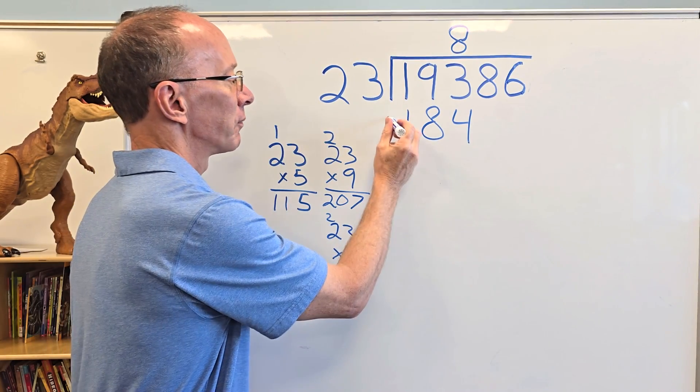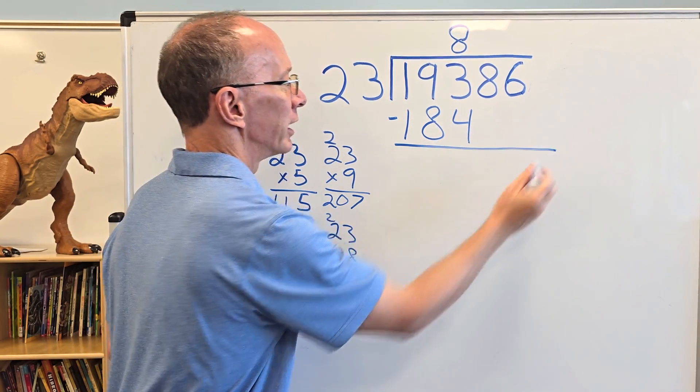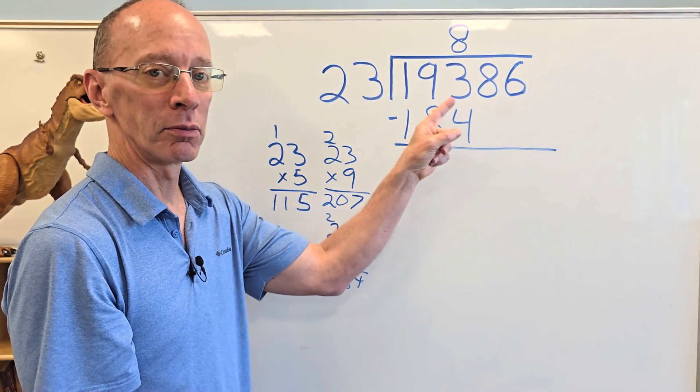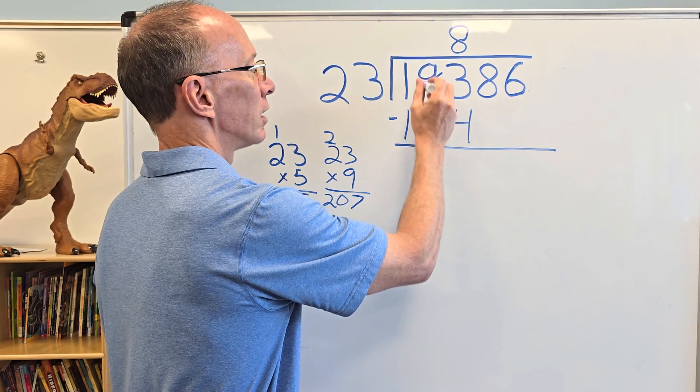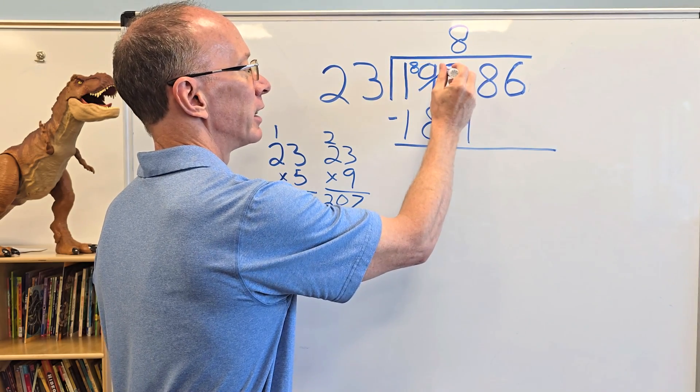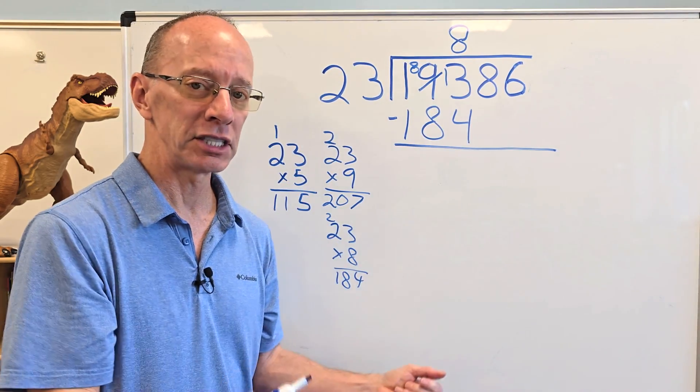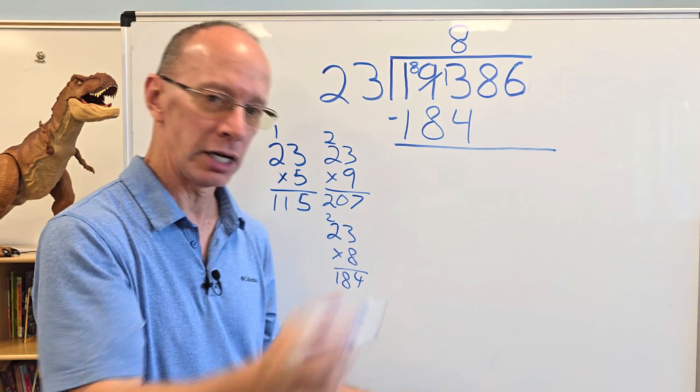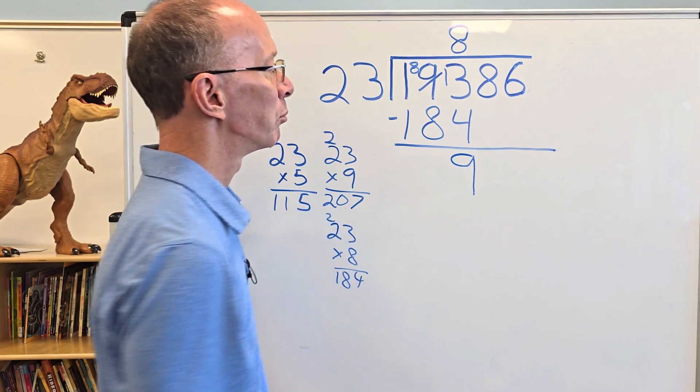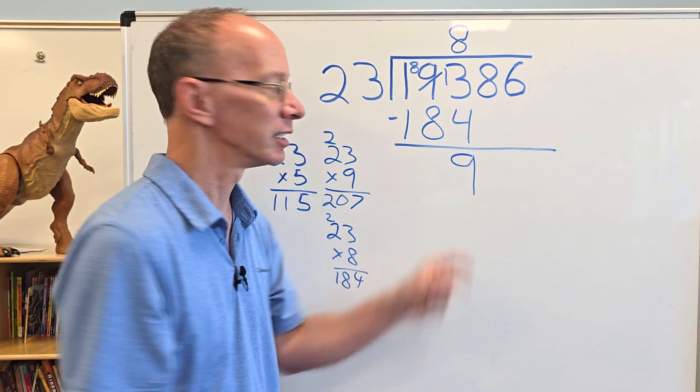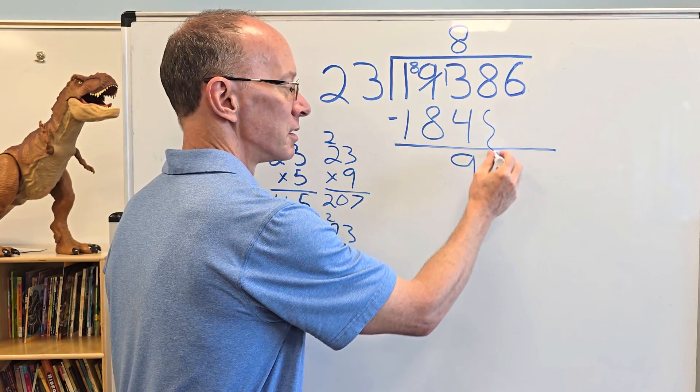Eight times 23 would equal 184. Now I need to subtract. So I subtract right now and I need to borrow because I got three and I want to subtract four. So I need to borrow. So I cross off the nine, make that an eight. This will be a 13. 13 minus four is nine.